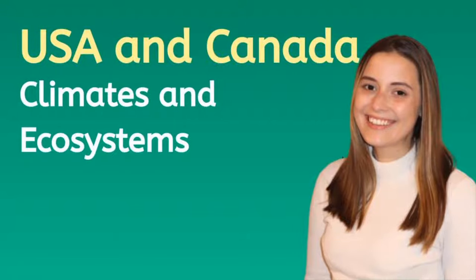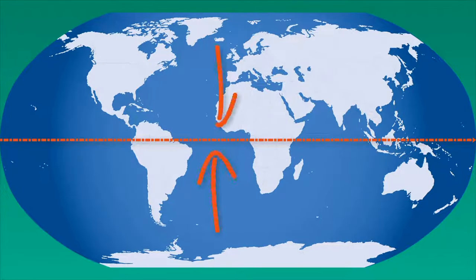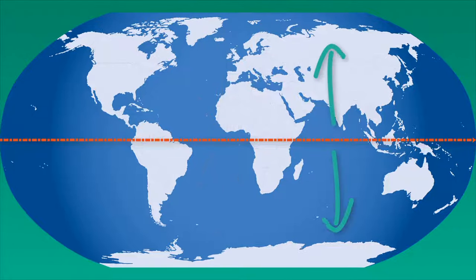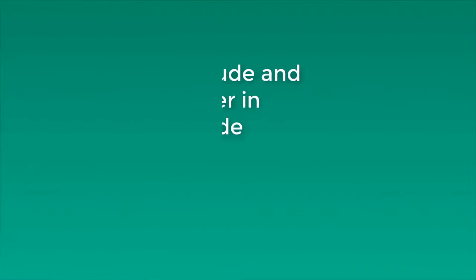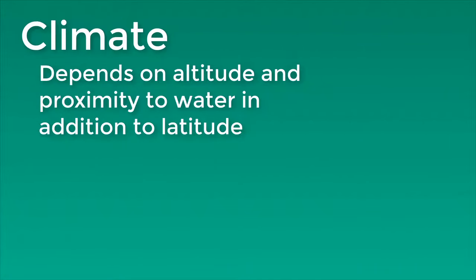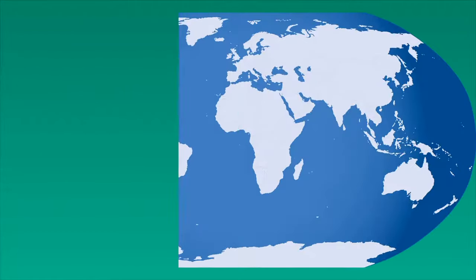Hey everyone, it's Kelsey. Generally speaking, temperatures warm up the closer you are to the equator and cool down the closer you are to the poles. But it's not always that simple. As we learned before, climate often depends as much on altitude or proximity to water as it does on latitude, which makes for a vast, varied, and complex spectrum of climate regions across the world.